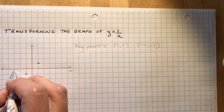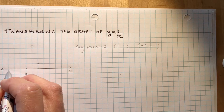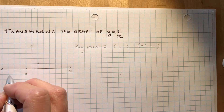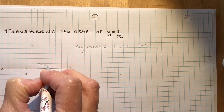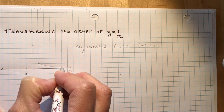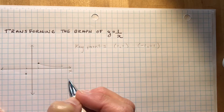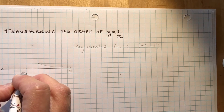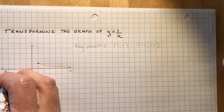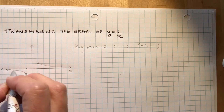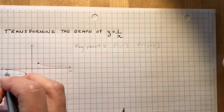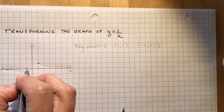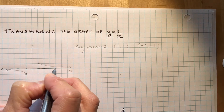As we go to the left, if I put in minus 3, I would have minus a third, minus a quarter, minus a fifth, and so on. The function as we go to the right is going to approach the x-axis from above, and on the other side it approaches the x-axis from below. It does not cross this axis — that's what we called an asymptote. We represent it with a dotted line.